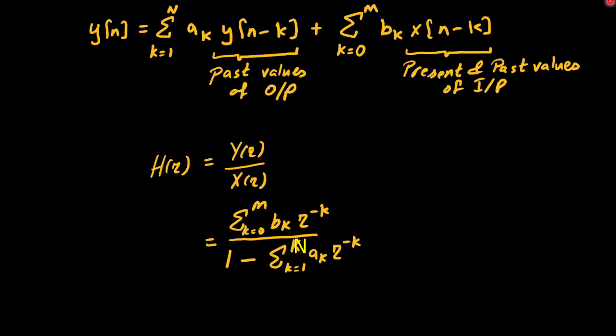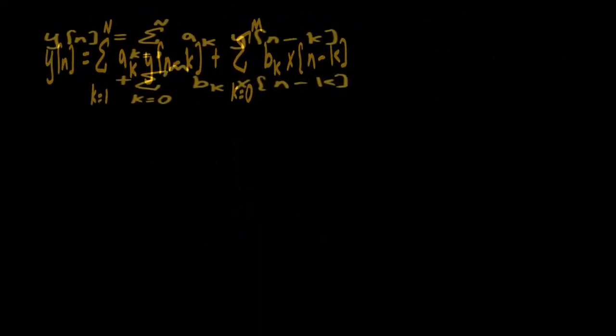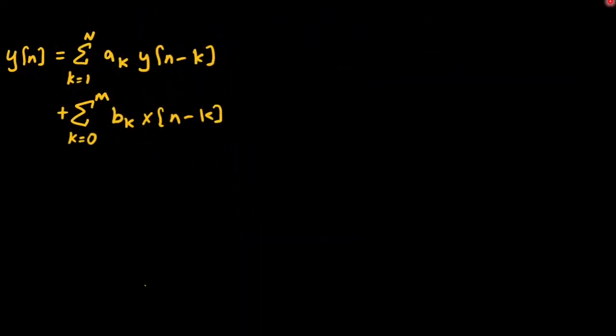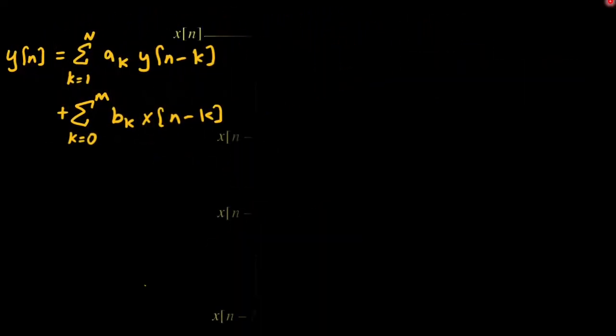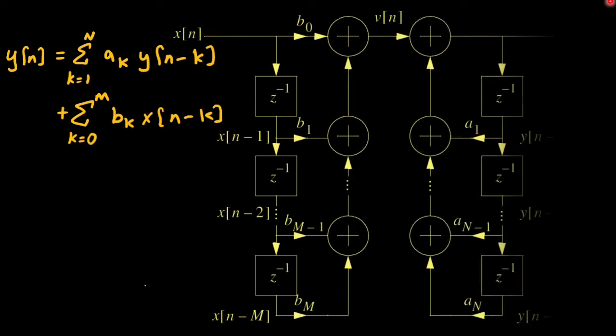Using the basic elements that is adder, multiplier and delay, the block diagram representation of this difference equation is the following. Herein on the left side, we have input which is multiplied with the coefficient b's passed through unit sample sequence delays and added to form an intermediate discrete time sequence v of n.